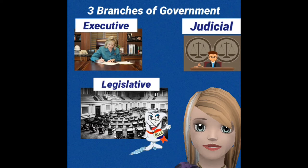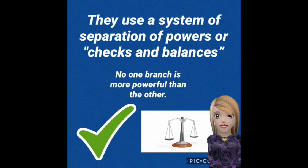Like the U.S. government, Oklahoma has three branches of government: the executive branch, the judicial branch, and the legislative branch. They use a system of separation of powers, or checks and balances. No one branch is more powerful than the other.